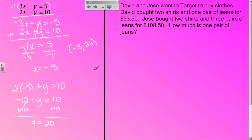Well, first of all, we have to set up variables. We're going to let x equal shirts and y equal jeans, because that's what they bought at the store. When you write your equations, you get to write one equation for David and one equation for Jose. The equation for David, he bought 2 shirts plus 1 pair of pants for $53.50. Jose bought 2 shirts, 3 pairs of pants for $108.50.